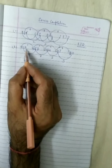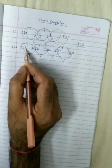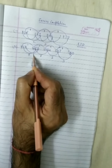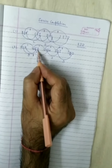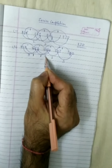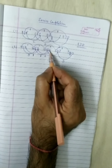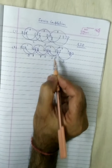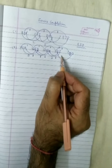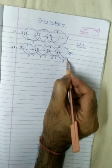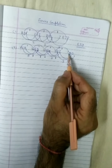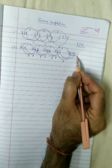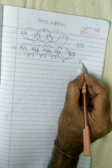We take the third letter. B to D — one letter gap. D to G — two letters gap. G to I — checking the pattern: one, two, one. So here must be two letters gap. After I: I, J, K, L. The third letter is L. So the missing term is Q, O, L.